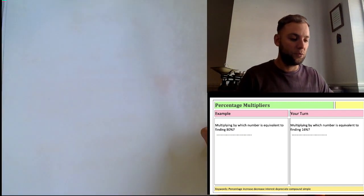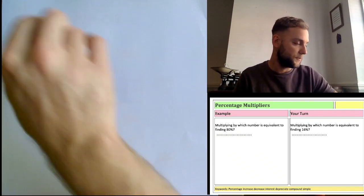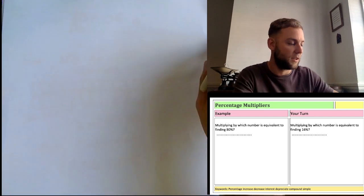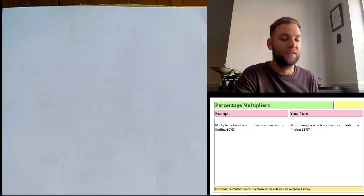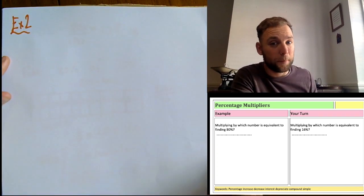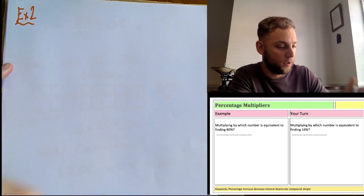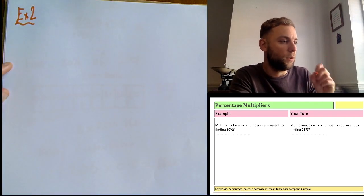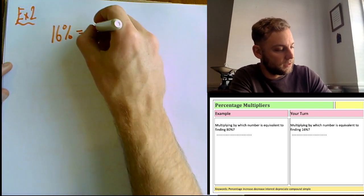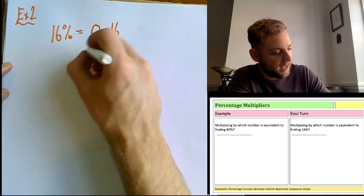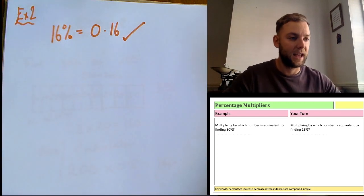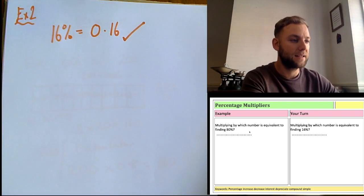Make sure you're getting these down in your notes, because the only way to learn maths is to do it. Example 2: which number is equivalent to finding 16%? This has come up on a past paper. 16% as a decimal equals 0.16, so your multiplier is 0.16.